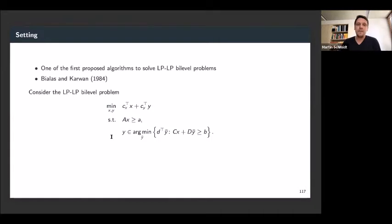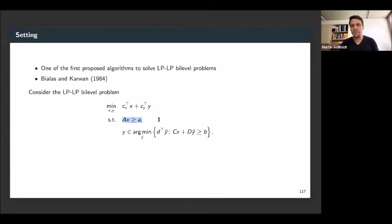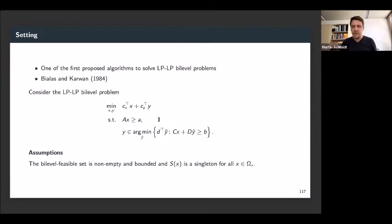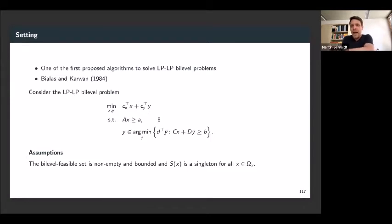In particular, this means that I still do not consider coupling constraints. Everything else is rather general. We also impose the same theoretical assumptions as in the section on geometrical results: the bi-level feasible set should be non-empty and bounded, and S of X is a singleton for all X in omega X, which means that for all possible leader decisions, we have a unique best response by the follower.